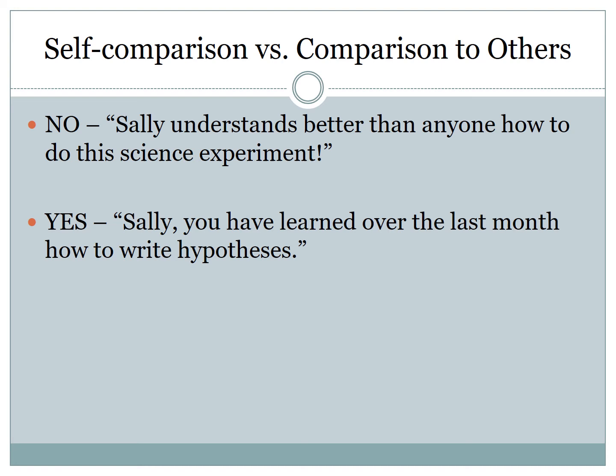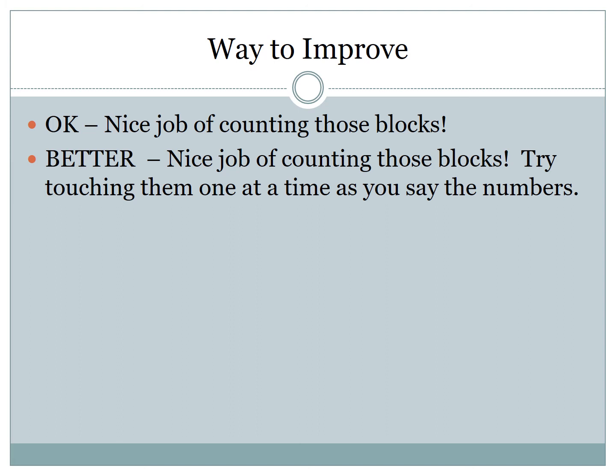Good feedback also encourages students to compare themselves with themselves versus others. Bad feedback would be 'Sally understands better than anyone how to do this science experiment' — it compares Sally with everybody else, will make other students resent Sally, and is counterproductive. Instead, compare her to herself: 'Sally, you've learned over the last month how to write hypotheses.' We're comparing where Sally is now with where she was a month ago. Good feedback also offers a way to improve: instead of just saying 'nice job counting those blocks,' say 'nice job counting those blocks — try touching them one at a time as you say the numbers.' You're giving students a way to get better at the skill.